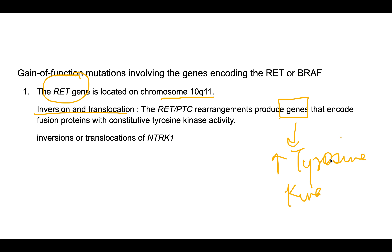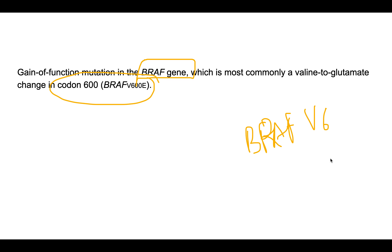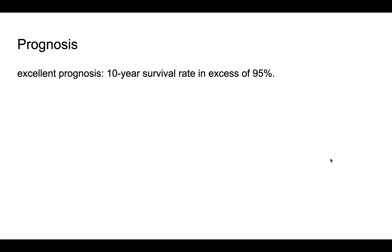The second characteristic gene mutation in papillary carcinoma is a gain-of-function mutation in the BRAF gene — specifically the BRAF V600E mutation at codon 600. This gene mutation is very specific for papillary carcinoma.